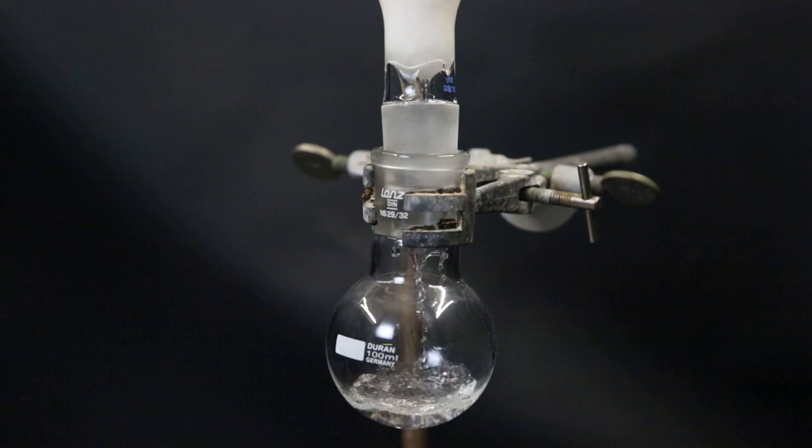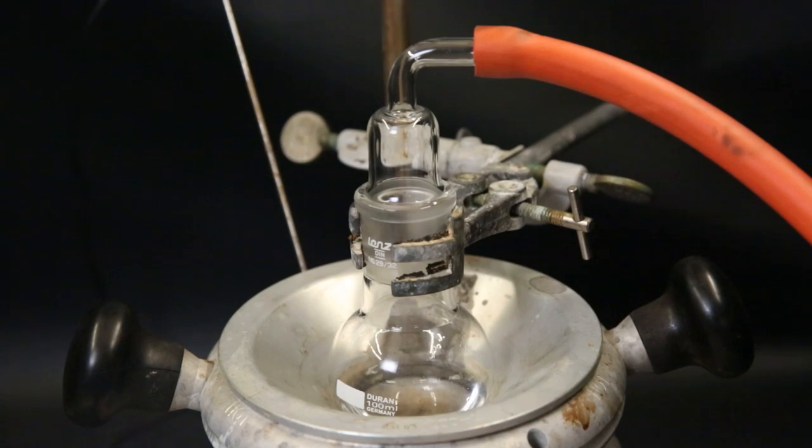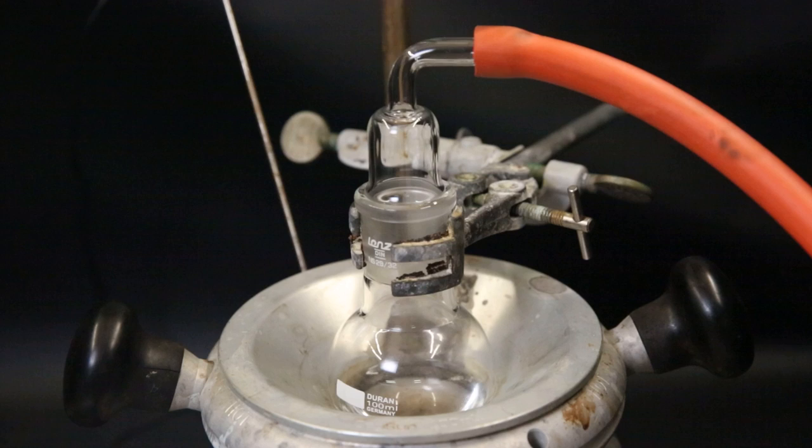I filter the mixture through some cotton and then move the flask with the filtrate to a heating mantle with a gas adapter. Like before, I heat the mixture lightly and pull a vacuum to remove all of the ether.